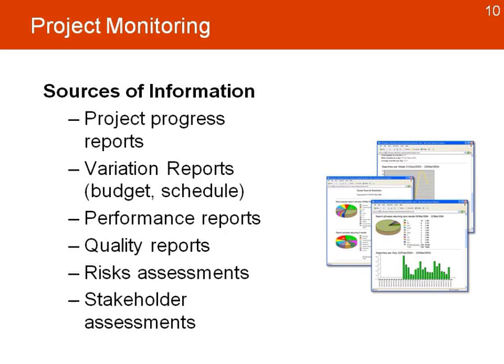The sources of information we use include project progress reports that give us key information about numbers — where we are and how much we've spent — variation reports that look at differences between what we planned and what we're actually doing, performance reports, quality reports, risk assessments, and stakeholder reports if there are changes in the levels of interest and support from stakeholders.